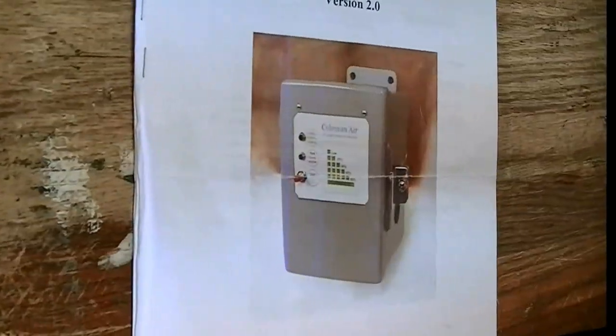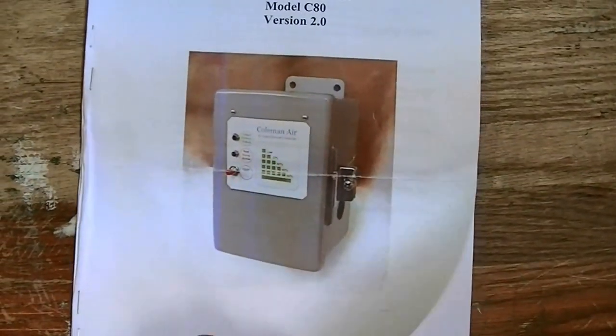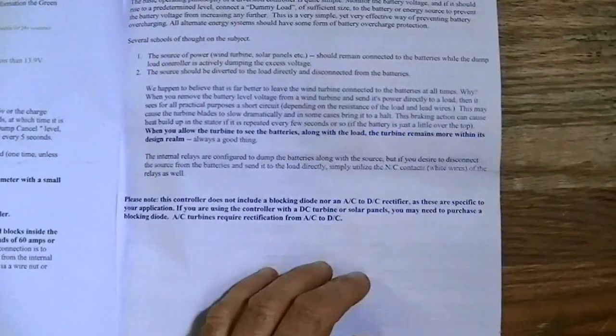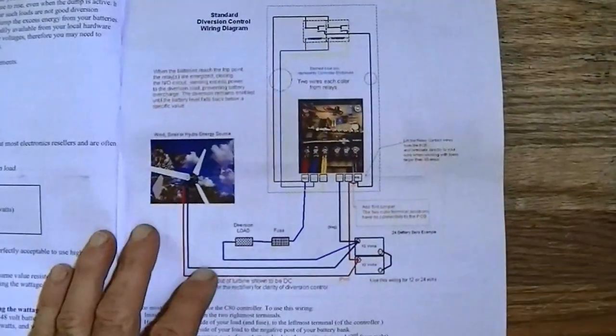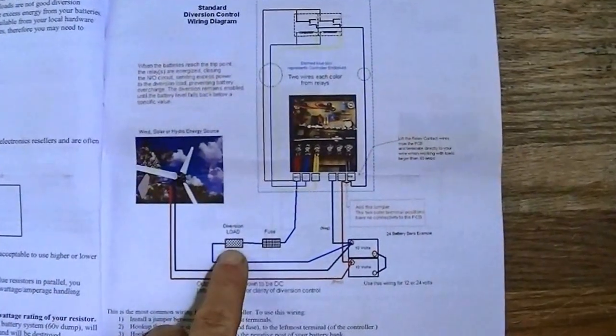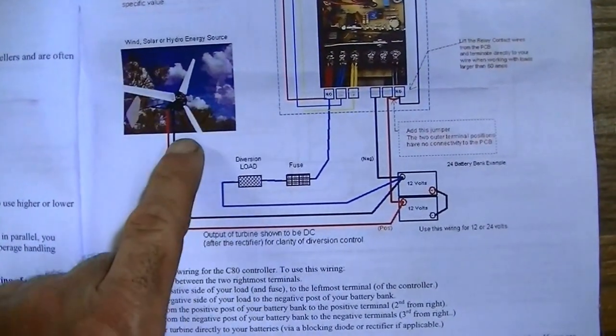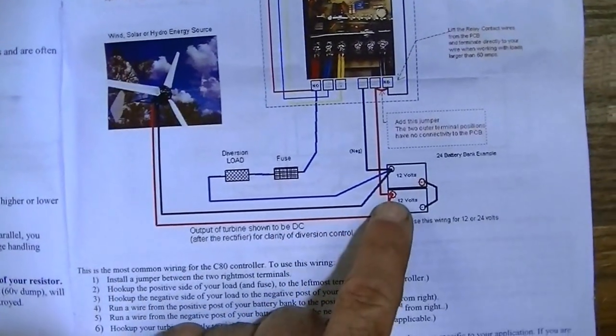Well, this is the manual that comes with the Coleman Air. It has several different ways to wire it. If you have a windmill, you have to have what's called a dump load so that the windmill always has a load on it. The windmill will hook directly to the batteries.